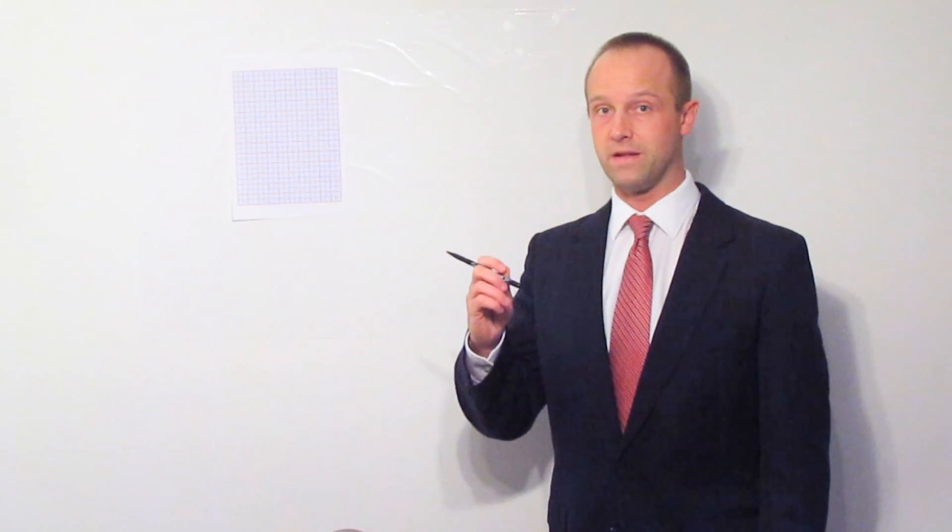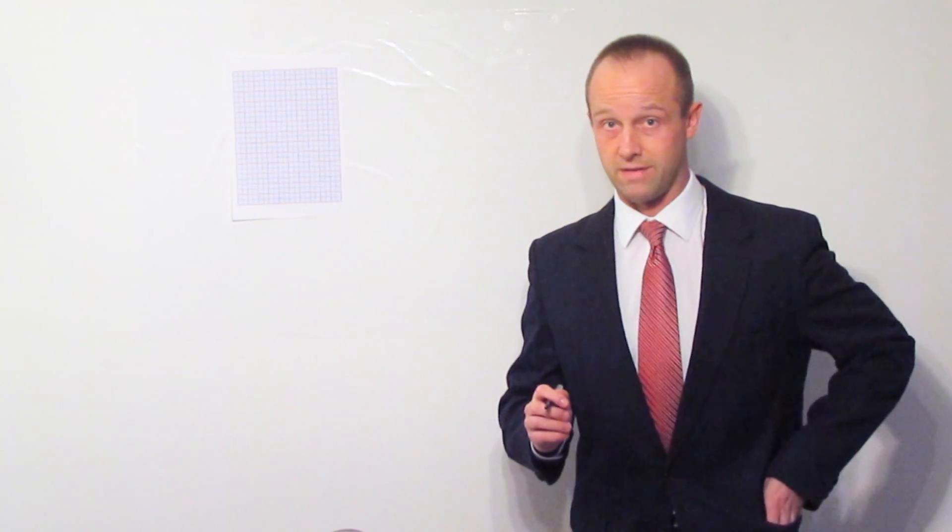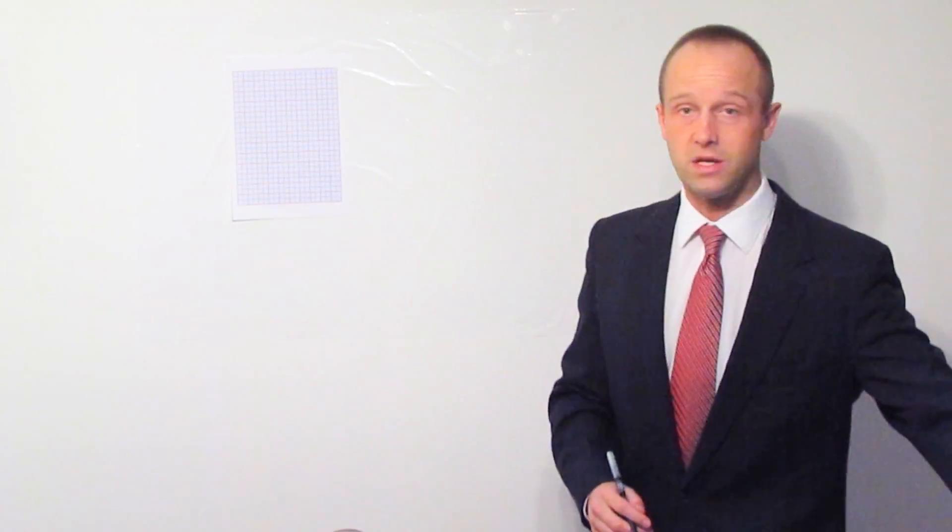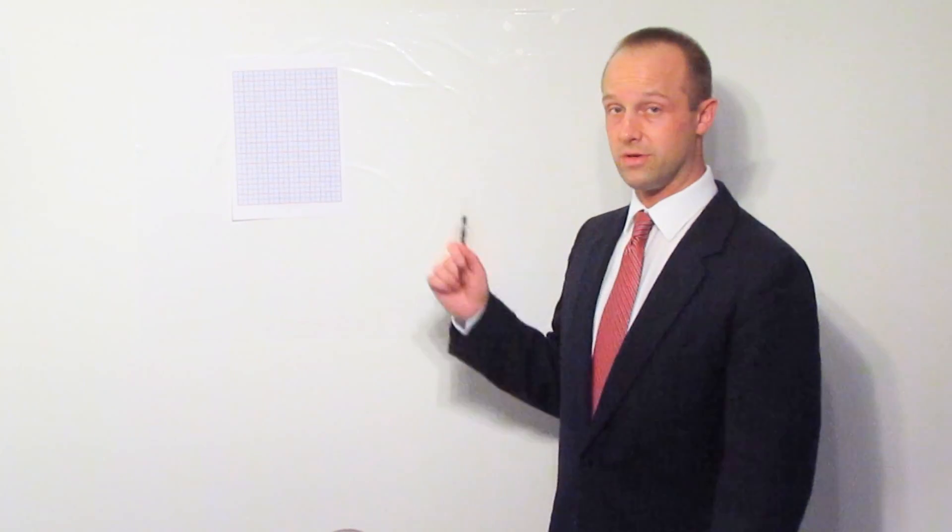I'm going to be using a fairly thick felt tip pen here. You should be using something a bit finer when you do your graph. You do get marked on accuracy, on how precise you are, so if you make a mistake with a really thick pen that could be a problem. So use a thinner pen, I'm just doing this so that you can see on the board.